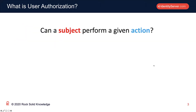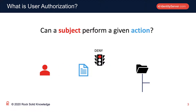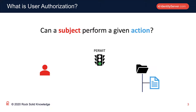So what do we mean by user authorization? Well, it boils down to this: can a subject, typically a user, perform a given action against a resource? Imagine this example: a user wants to write a file to a particular folder. In order to do that, they need to be authorized. The authorization subsystem will either permit them or deny them. The user attempts to write the file to the folder — the authorization system denies. But when they attempt to write to a different folder, it may very well permit the action.